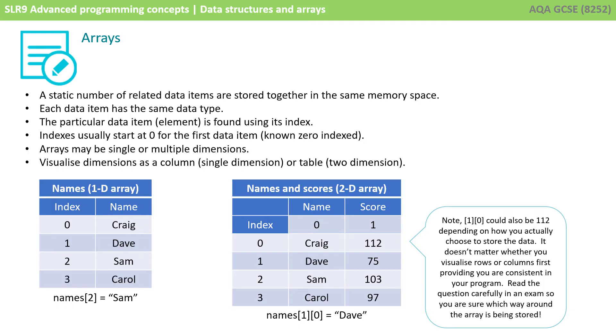Now, a quick note, and something which is often asked by students and teachers, that when we say index 1, 0, we could be accessing value 1, 1, 2. It depends how you actually choose to store the data behind the scenes. There's not a fixed way of referencing the data in an array. You don't go, for example, always down the x-axis and then the y-axis. It doesn't matter when you visualize rows or columns first, as long as you're consistent in your program. So, read the questions carefully in an exam, so you are sure which way round the data is being stored.